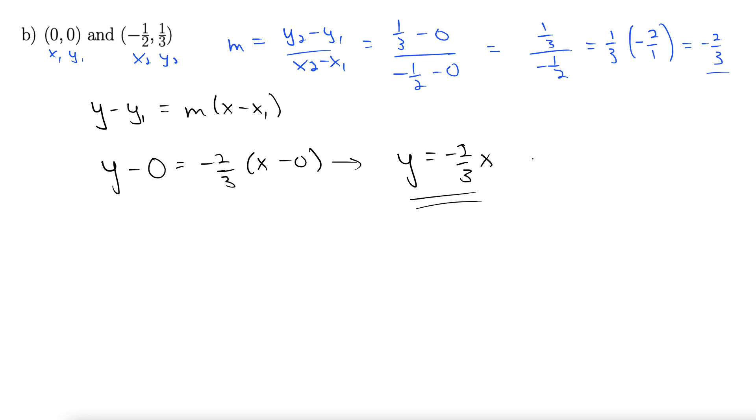By that I mean y equals mx plus b form. You don't have to write the plus 0 for the b. If it asks for this in standard form, standard can't have fractions in it. I'm going to multiply this 3 up to the other side. Multiply both sides by 3. That would give 3y equals negative 2x. Then add the 2x to both sides. 2x plus 3y equals 0. There's our standard form.